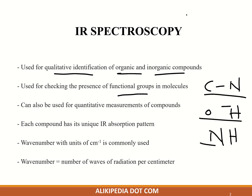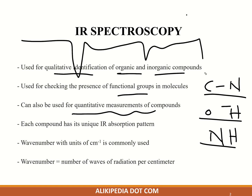IR spectroscopy can tell you about the functional groups in a molecule. It can also be used for quantitative measurements of compounds — from the peaks of the IR you can determine the quantity. Each compound has its own IR absorption spectrum, meaning it will absorb IR differently, and therefore there are regions in IR which we will explain.